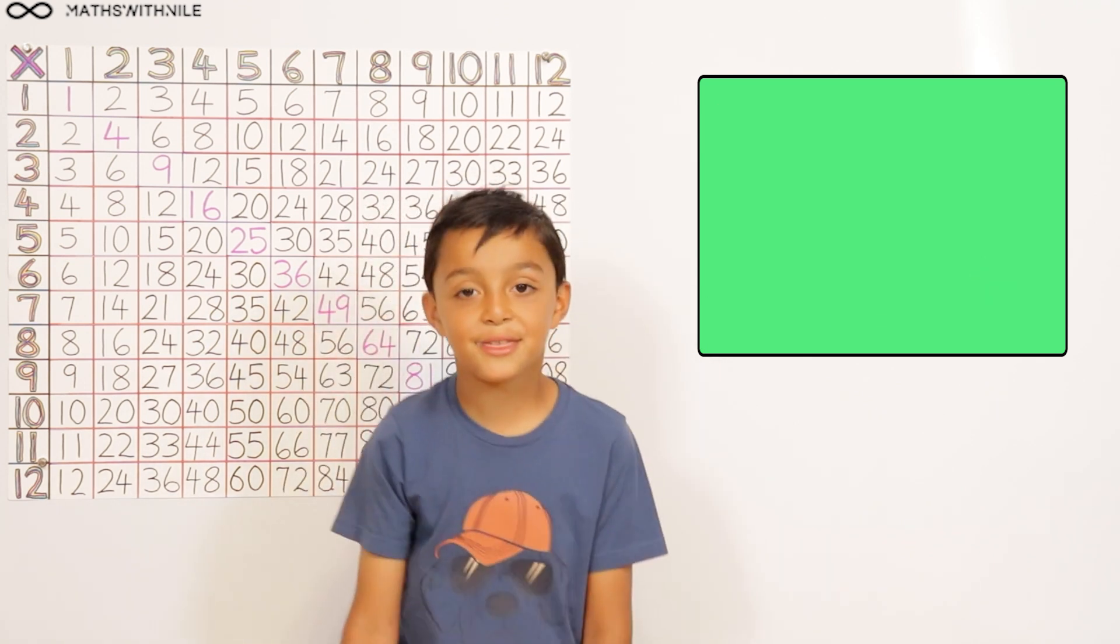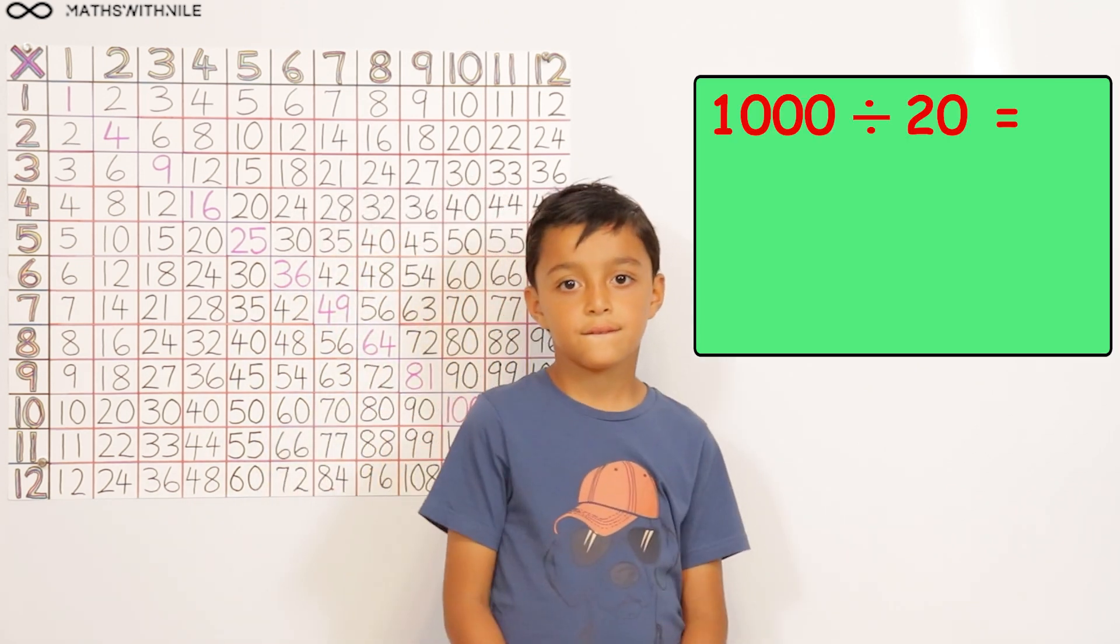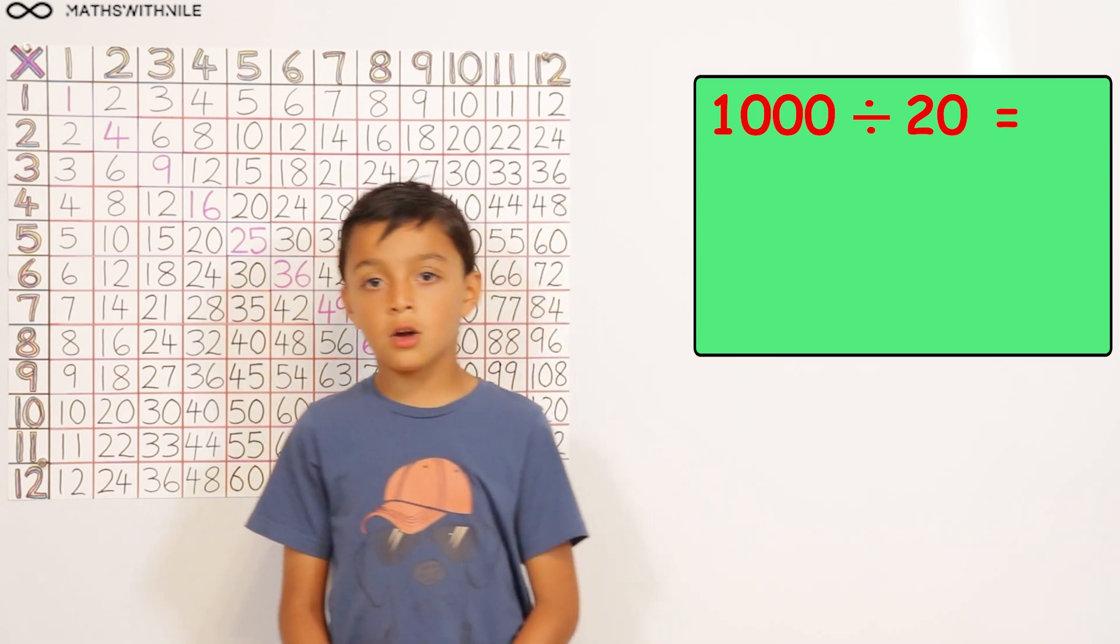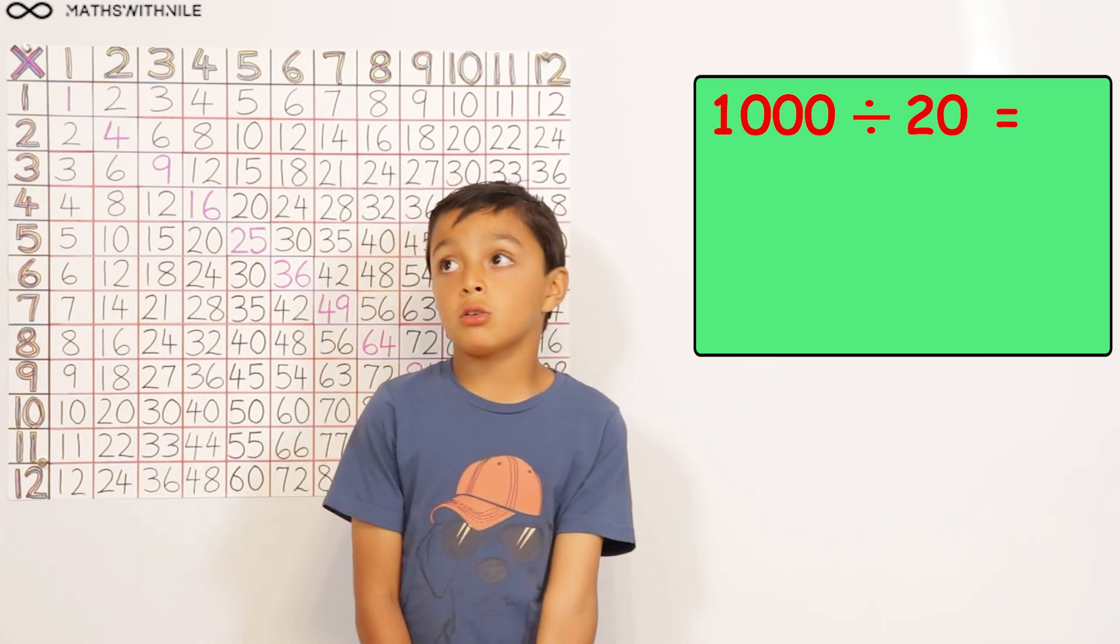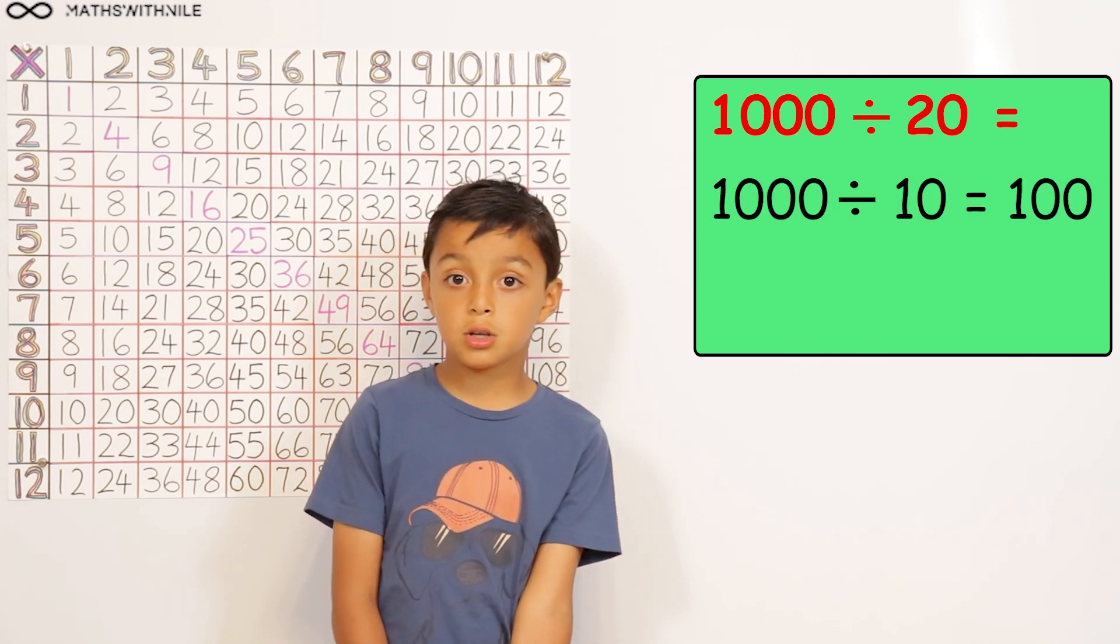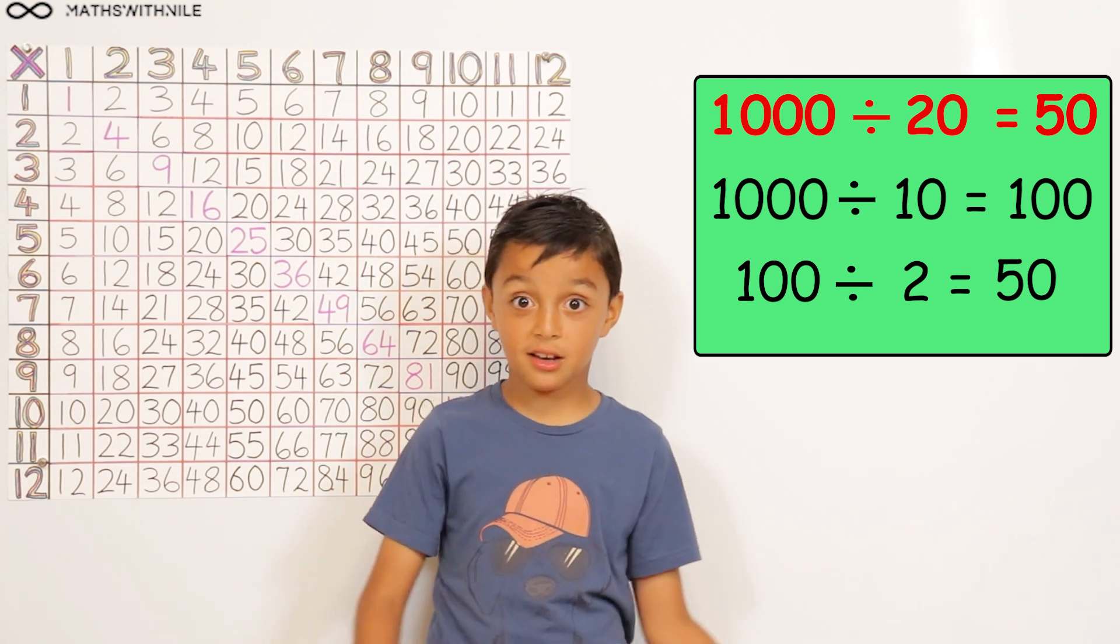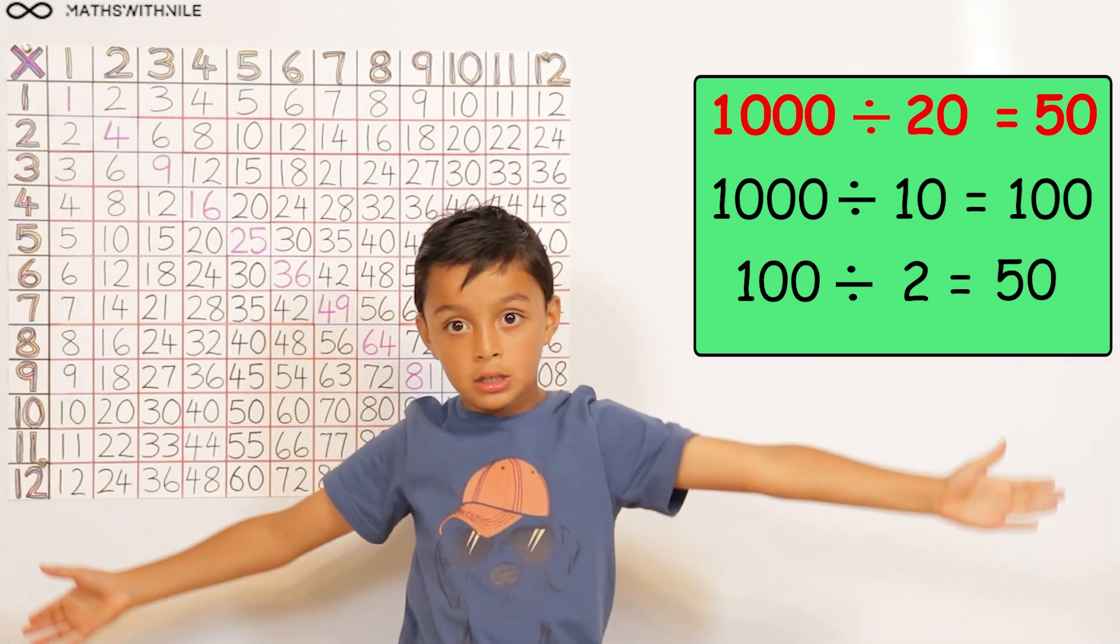One more? Yes. What is 1000 divided by 20? So, 1000 divided by 10 is 100. And then 100 divided by 2 is 50. So the answer is 50. Excellent, Niall.